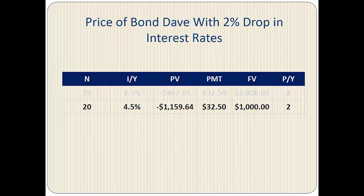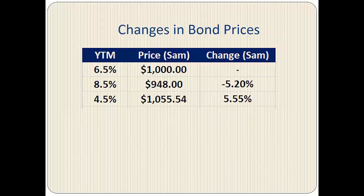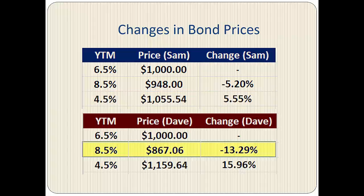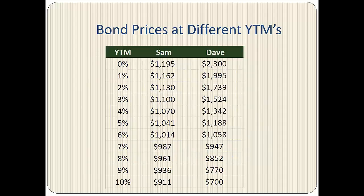Next, by changing the discount rate to 4.5%, we calculate the price to be $1,159.64. Going back to bond SEM, when the interest rates rose by 2%, the price dropped to $948 or by 5.2%. When the interest rates fell by 2%, the price increased from $1,000 to $1,055.54 or by 5.55%. For bond DAVE, a 2% rise in interest rates results in a price drop of 13.29%, and a 2% drop in interest rates results in a price increase of 15.96%.